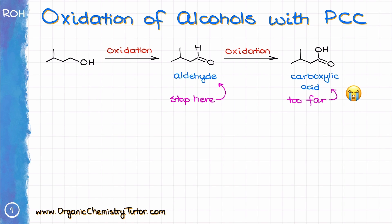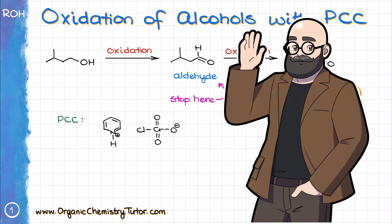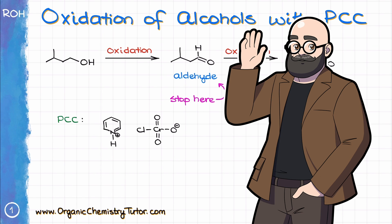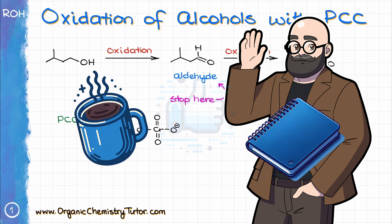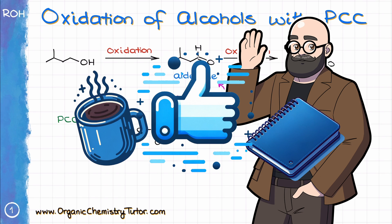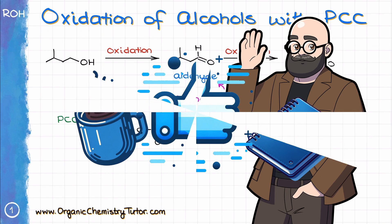When we need to selectively oxidize our alcohol and stop at the formation of an aldehyde without over-oxidizing to carboxylic acid, the first reagent that comes to mind is PCC. Hey everyone, Victor is here, your organic chemistry tutor, and in this video we'll talk about the oxidation of alcohols with pyridinium chlorochromate, also known as PCC. So grab your cup of coffee and notebook to work through the examples with me, hit that like button for good luck on the test, and let's get started.